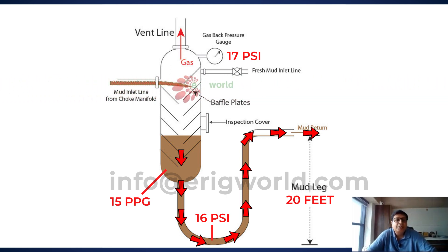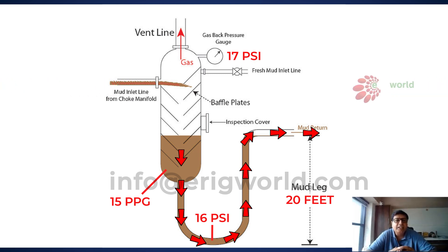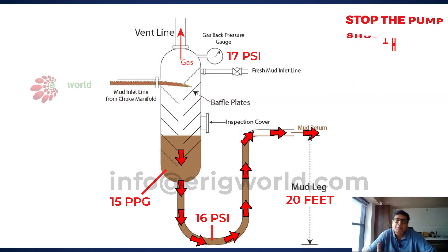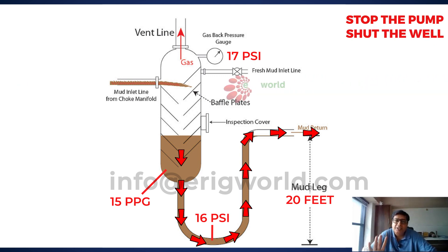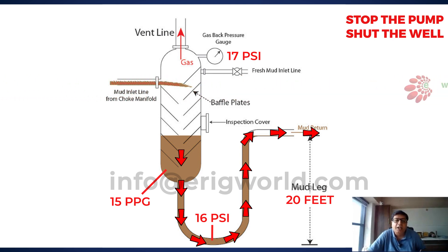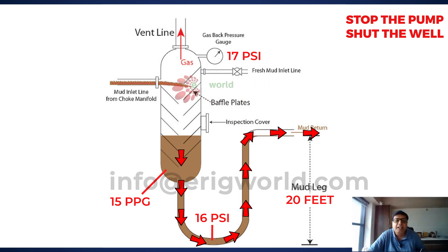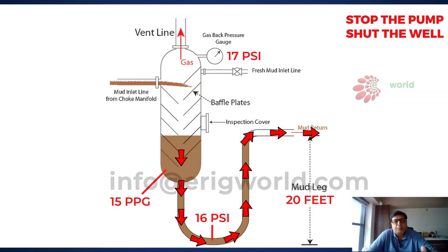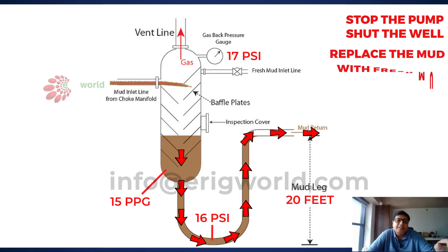So in this case, what do we have to do? Any problem during well killing, you have to respond immediately. First action remains the same: stop pump and shut the well. Second, since there is contamination of mud in the dip tube, you need pure mud — only pure mud will give the 16 psi hydrostatic head. So you have to flush the system and replace the mud in the liquid seal or dip tube with fresh mud. Take mud from the suction tank from where the well-killing pump is taking suction.